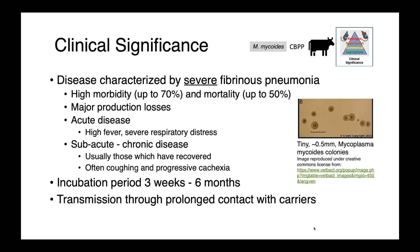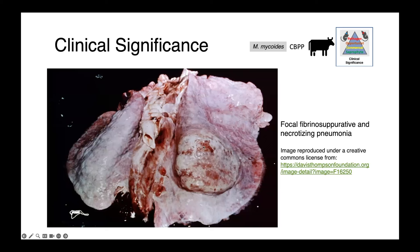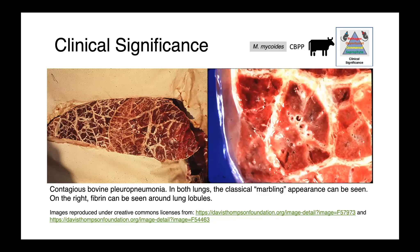The incubation period is variable and can be quite long — three weeks to six months — which makes control quite challenging in endemic regions. Transmission is through prolonged contact with carriers. In this image, you can see focal fibrinosuppurative and necrotizing pneumonia, with a very pronounced lesion on the lung lobe. What's interesting about contagious bovine pleuropneumonia is the classical marbling pathological lesion — you can see on cut section this very marbled appearance. On the right, fibrin can be seen around the lung lobules — pathological lesions that are very characteristic and should absolutely raise red flags.